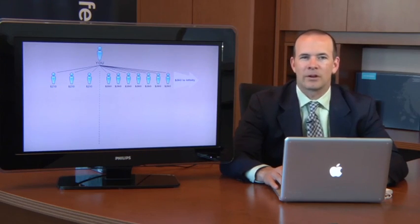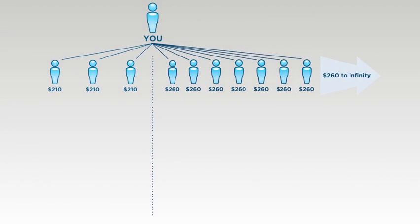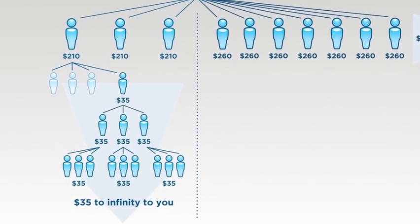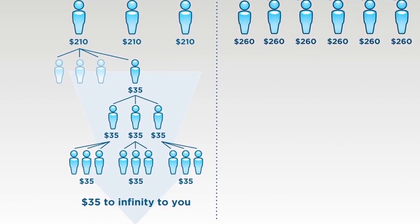It doesn't stop there, however, because when you help each one of your personal enrollees pick up that additional $50, or in other words, enroll their fourth person, we're going to pay you $35 on that person. And as you help that fourth person duplicate, enroll their first three, their three, their three infinitely deep, we're going to pay you $35 on each one of them infinitely deep, which is pretty exciting when you look at the earning potential that exists there.